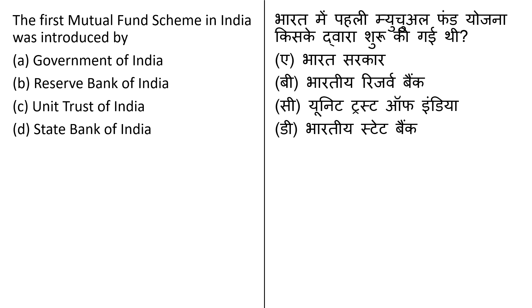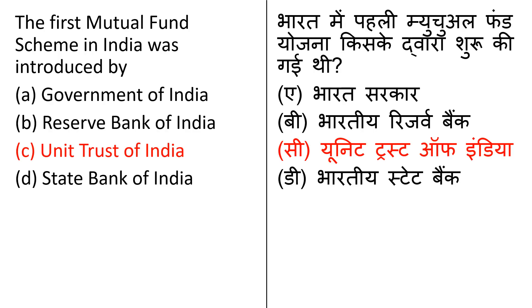Who introduced the first mutual fund scheme in India? Options are Government of India, Reserve Bank of India, Unit Trust of India, and State Bank of India. A mutual fund is a type of financial vehicle made of a pool of money collected from many investors to invest in securities like stocks, bonds, money market instruments, and other assets. The first mutual fund scheme was launched in 1964 by the Unit Trust of India. So the correct answer is option C: the first mutual fund scheme in India was introduced by Unit Trust of India.